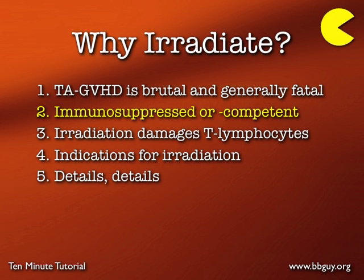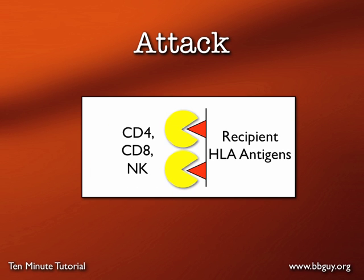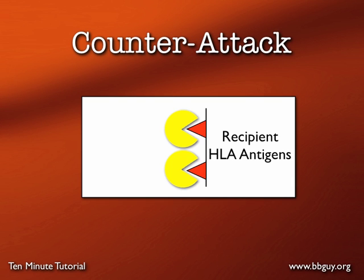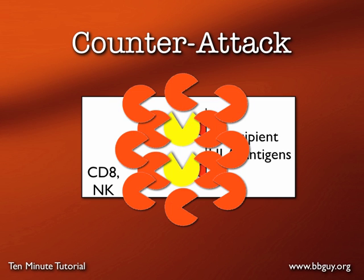It can occur in either immunosuppressed or immunocompetent patients. Let's imagine a normal transfusion: if the blood donor and recipient are not HLA-identical — in other words not identical twins — then the transfused T-lymphocytes that go along with a cellular blood product will look at the recipient's HLA type, recognize it as foreign, and try to mount an immune response. Fortunately, most of the time patients' immune systems are healthy enough that the recipient's own cells can counter-attack, call in other T-lymphocytes, overwhelm those transfused cells, and it's no problem.